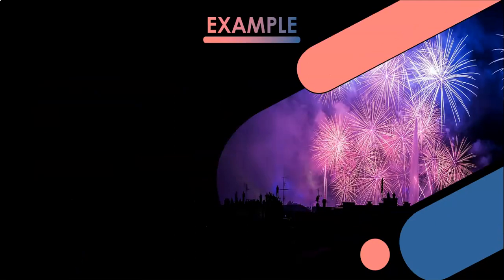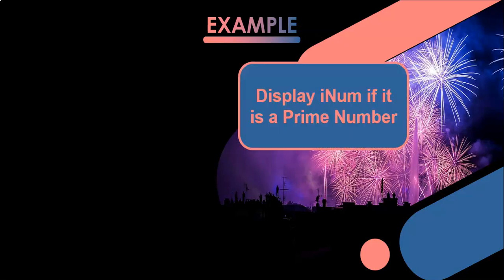Let's take an example we did in our series on for loops — the prime number. A prime number is a number that has only two factors: one and itself. So if you want to take a number like five, you check all the numbers from one to five. How many of those can go into our number without a remainder? If it's only two of them, then it's a prime number.